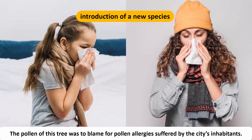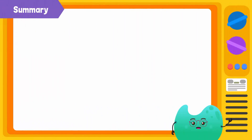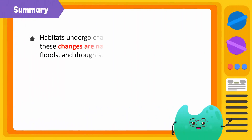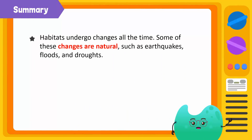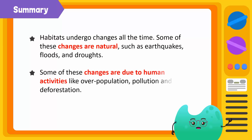To summarize, habitats undergo changes all the time. Some of these changes are natural, such as earthquakes, floods, and droughts. Whereas other changes are due to human activities like overpopulation, pollution, and deforestation.